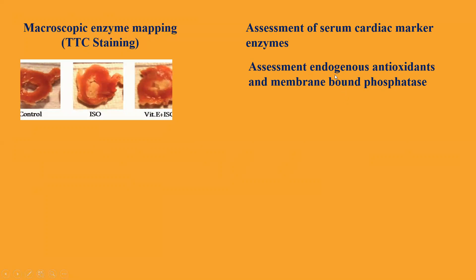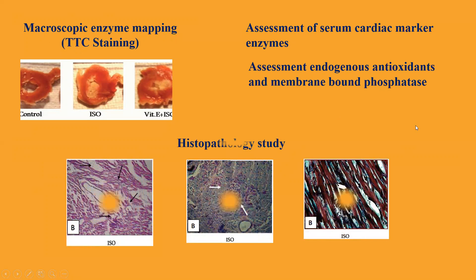For preparing homogenates of the tissue, a separate video on tissue homogenation has already been uploaded. Then go with the histopathological study, which includes hematoxylin and eosin staining, PAS staining, and Masson's trichrome staining. Different staining techniques have different importance in evaluating myocardial tissue damage.